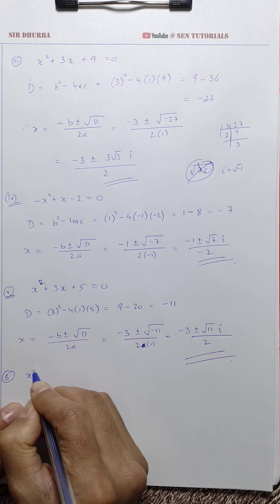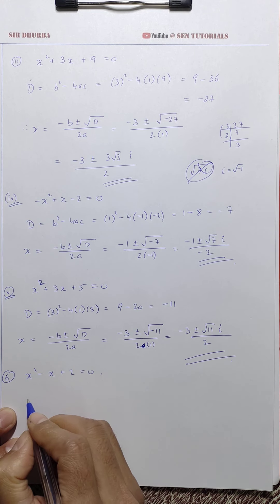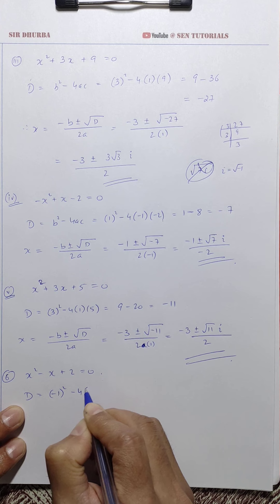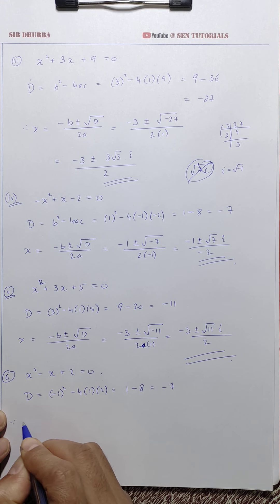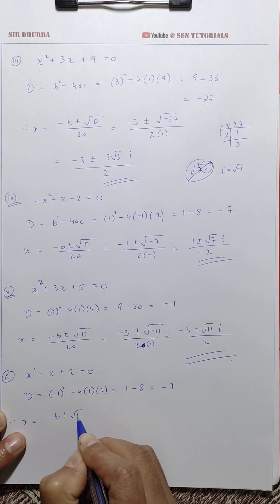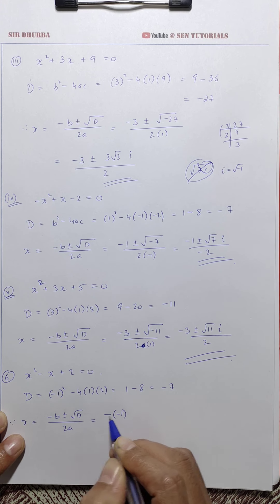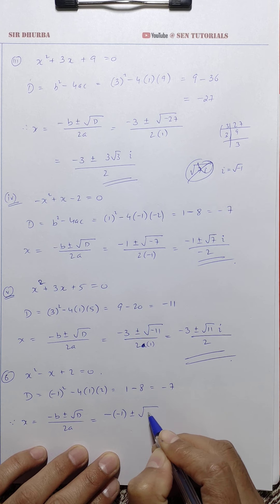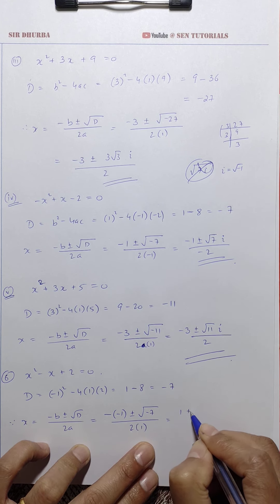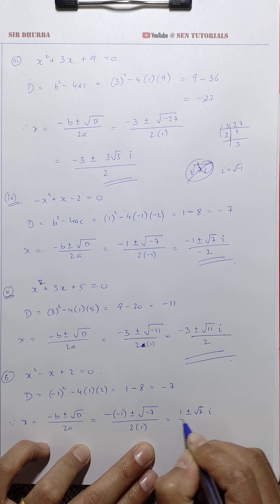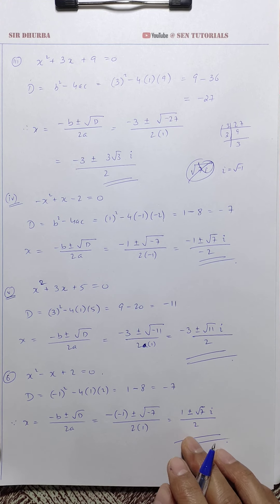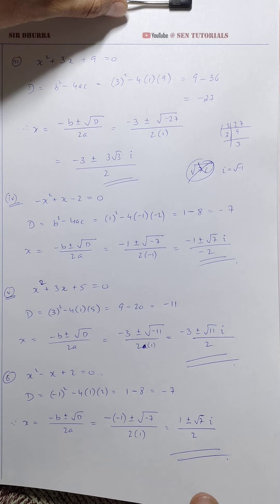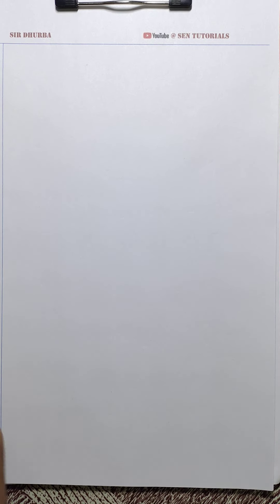Question 6: x² - x + 2 = 0. D = b² - 4ac = 1 - 4(1)(2) = 1 - 8 = -7. Therefore x = (-b ± √D) / 2a = (1 ± √7 i) / 2. Carelessness should be avoided. Number 6 is done.